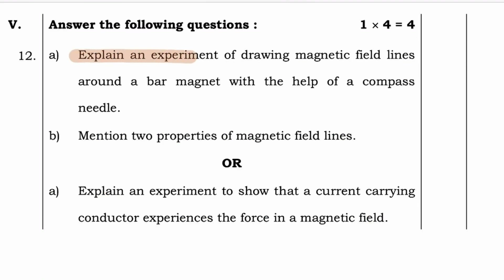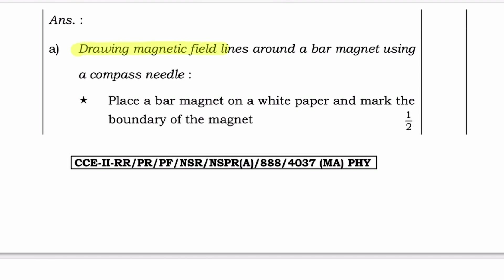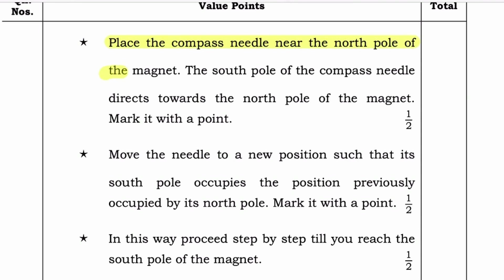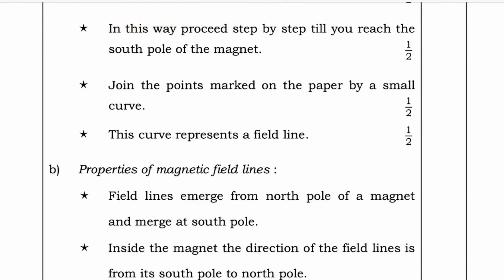Explain an experiment of drawing magnetic field lines around a bar magnet with the help of a compass needle. Place a bar magnet on a white paper and mark the boundary of the magnet. Then place the compass needle near the north pole of the magnet. The south pole of the compass needle directs towards the north pole of the magnet. Mark a point. Next, move the needle to a new position such that its south pole occupies the position previously occupied by its north pole. Mark it with a point. Proceed step by step till you reach the south pole of the magnet. Join the points marked on the paper by a small curve. This curve represents a field line.